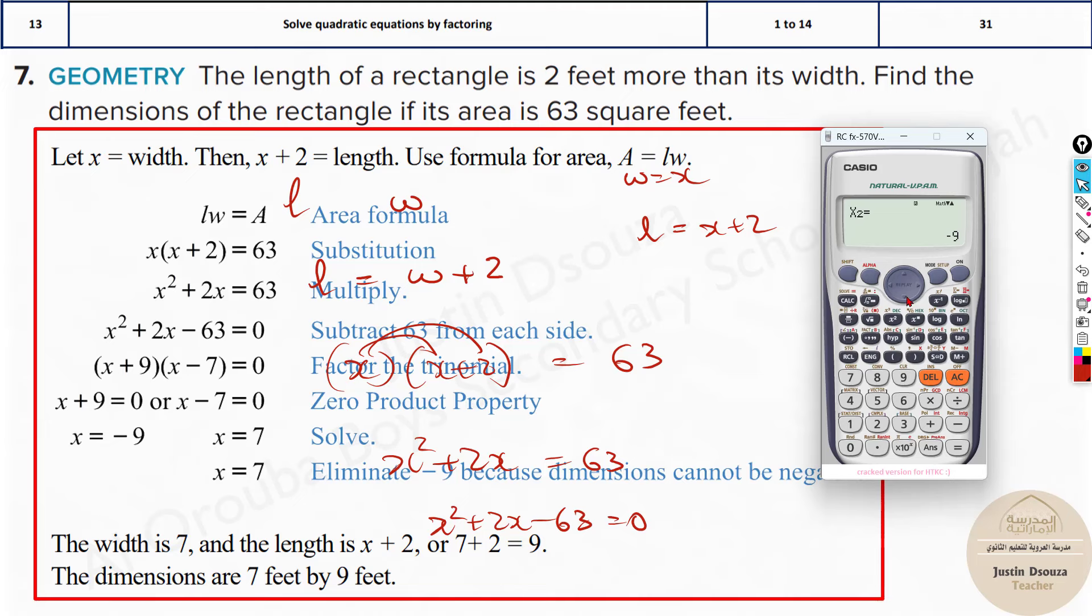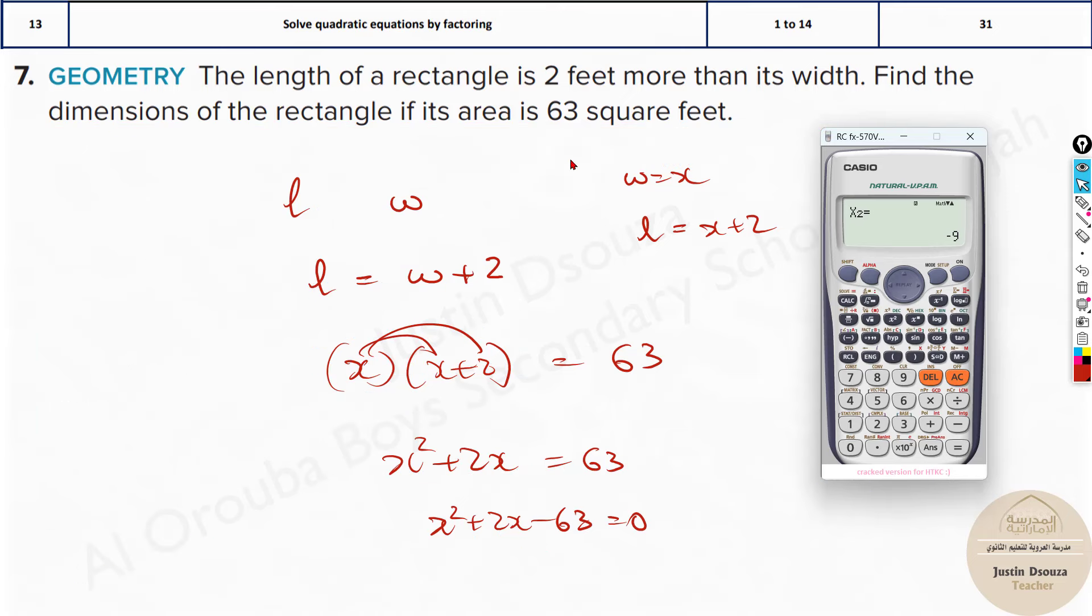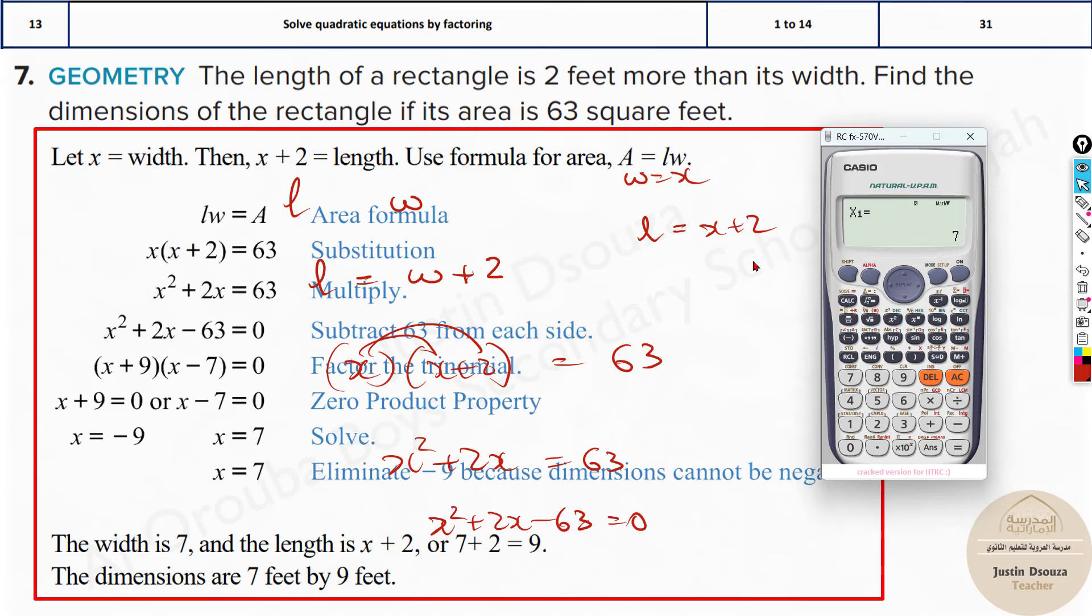Now it's not finished. You're getting minus 9. Can you use minus 9 as any length? It's not possible. So the only answer is 7. The width is 7 because x is the width. Length will be 7 plus 2, that is 9. So 7 is the width and 9 is the length.